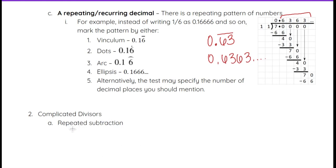Additionally, when we have complicated divisors where it's hard to tell how many times the divisor goes into the dividend, we can use repeated subtraction — counting how many times we can subtract to figure out what number goes in the quotient line. Repeat that process until all numbers in the quotient line are filled and you end up with zero at the end.